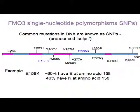For E158K: about 60% of the world population have an E — glutamate — at amino acid position 158, and about 40% have a K — lysine — at that position. For E308G, about 80% of people have the 308E, and 20% have the G at that position.